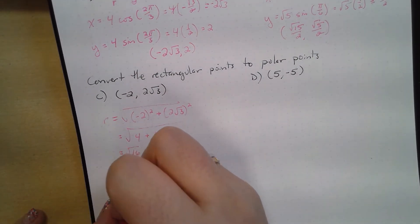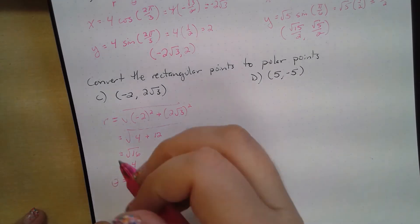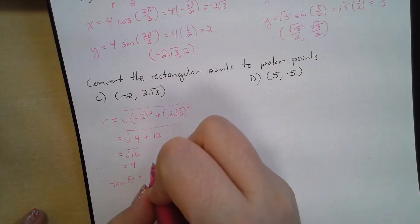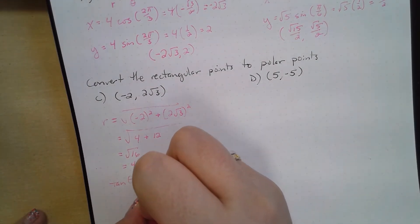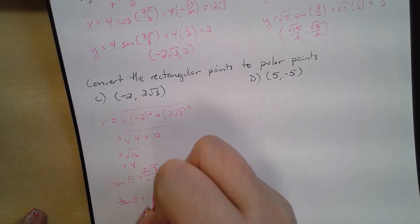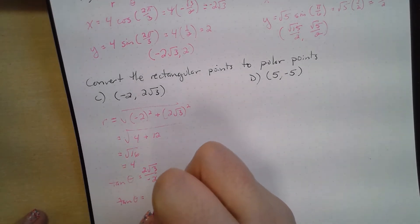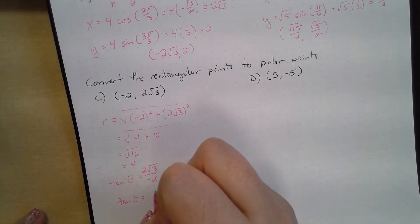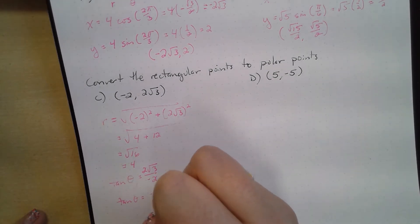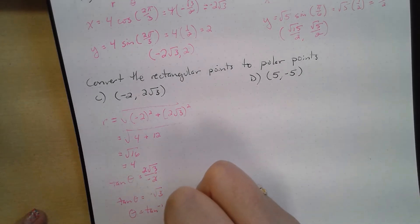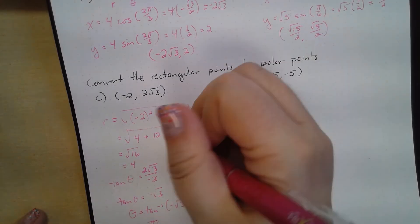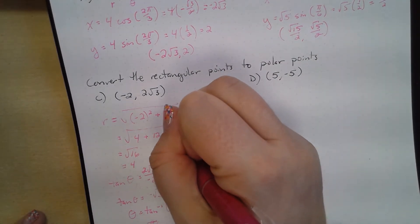And theta: the tangent of theta equals y over x, which is 2√3 over −2, so tangent of theta equals −√3. Therefore theta equals arctangent of −√3, which equals −π/3. So our polar coordinate is (4, −π/3).